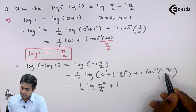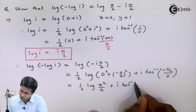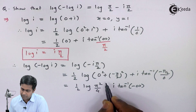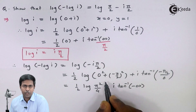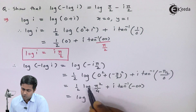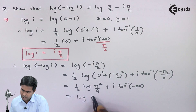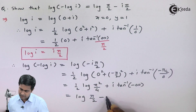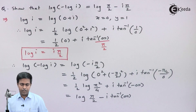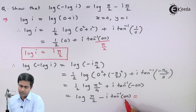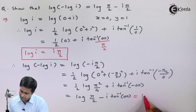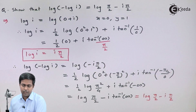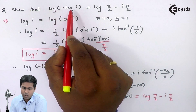Since anything divided by 0 is infinity and the numerator is negative, we get tan inverse of negative infinity. Taking the one half as a power converts it to a root, giving log of root of pi squared by 4, which is log of pi by 2. And tan inverse of negative infinity equals minus tan inverse of infinity, which equals minus pi by 2. So we get the final value: log of pi by 2 minus i pi by 2, which is exactly what was asked to be shown.